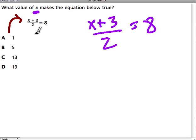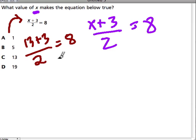Let's just try 13. We'll start with C. If x was 13, we'd have 13 plus 3, and then over 2, that means divided by 2. And if that's the right answer, it would also equal 8.